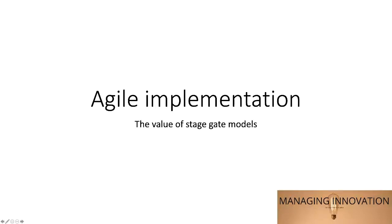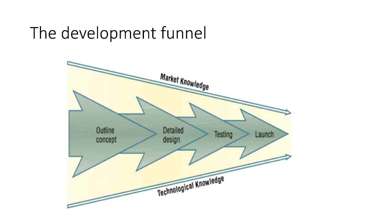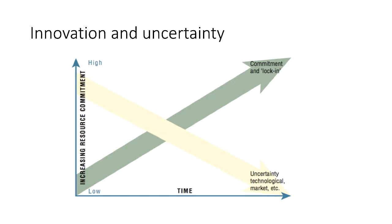Agile implementation and the value of stage gate models. We've seen that innovation involves a journey — that we don't simply create value by having an idea. That idea has to be developed, tested, and prototyped, and finally launched into our internal or external marketplace. It's a process of gradual uncertainty reduction. The challenge is that in learning to reduce uncertainty from the early stages — where we know very little about the market or the technology — to get to a place where we have something available is going to cost resources.